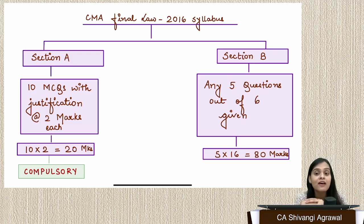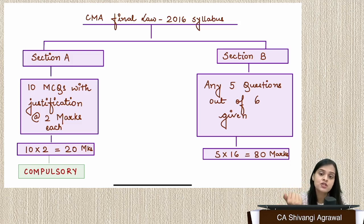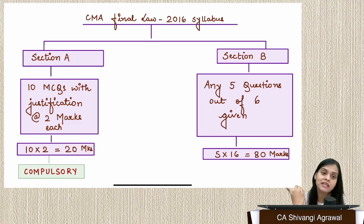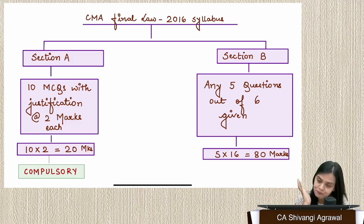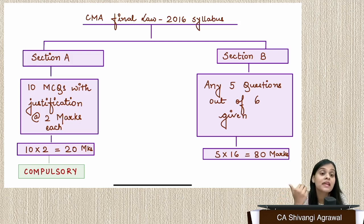Coming to Section B, you have to answer any five questions out of six, so you have a choice to select the best five you know. Each question will have different parts but will collectively be 16 marks each, divided into parts. The last question usually is 'write short notes on,' where again you are given an internal choice. For 2016 syllabus, I would insist that students be more prepared for case studies because most questions are case-based.